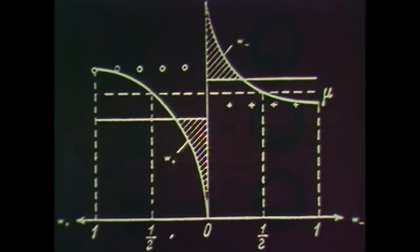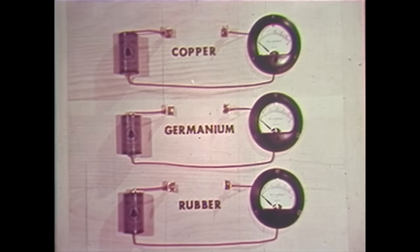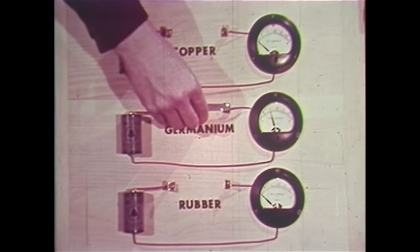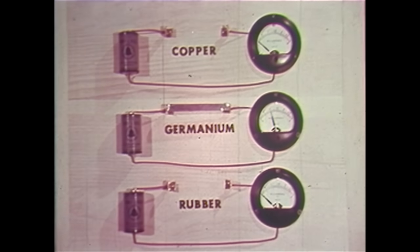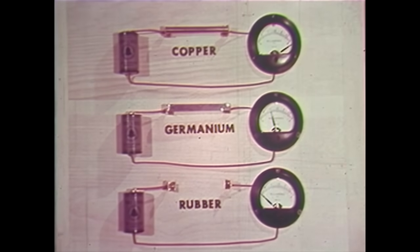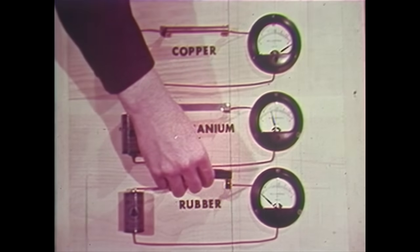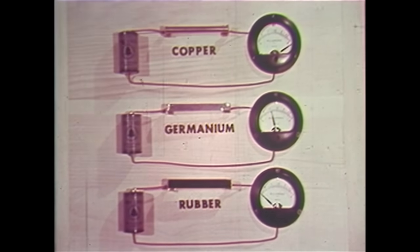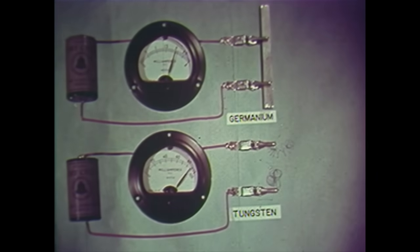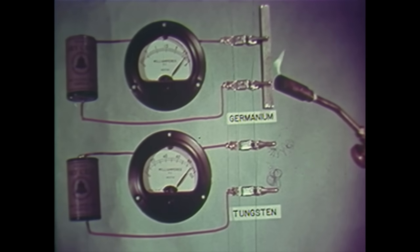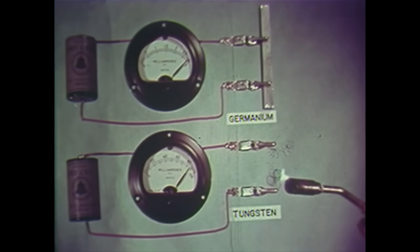For example, electrical conductivity of semiconductors like germanium lies somewhere between that of good conductors like copper and good insulators like rubber. Conductivity of semiconductors increases when their temperature is raised, while conductivity of metals decreases when they are heated.